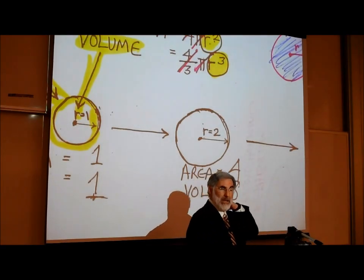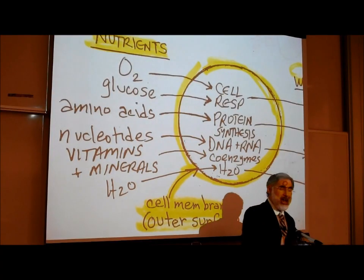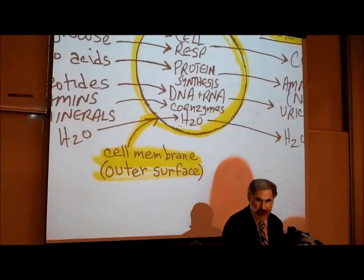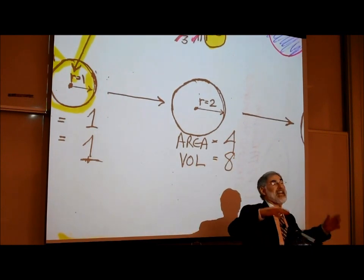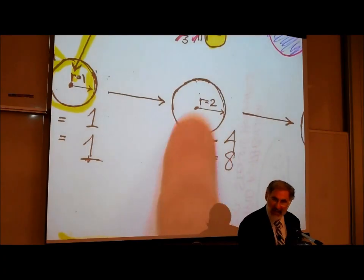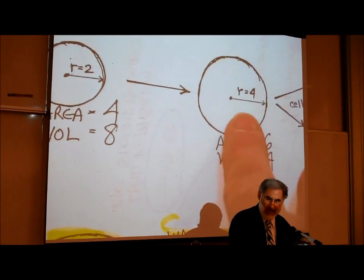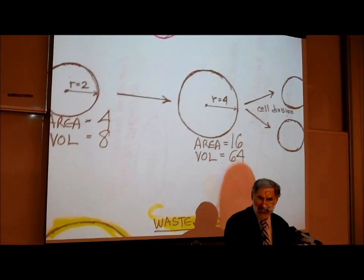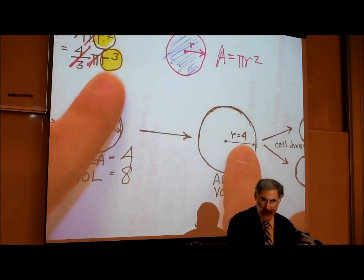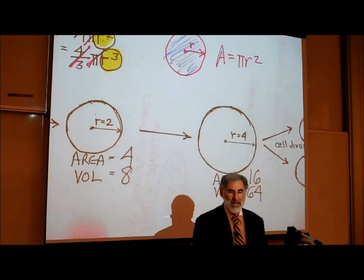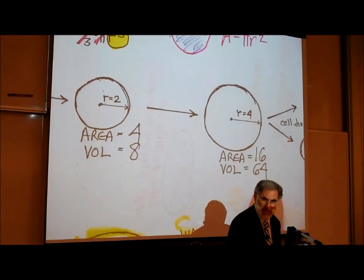Let's take it one more step: with a radius of 4, the outer surface is 4² = 16, and the internal volume is 4³ = 64. As this cell grows larger, its internal volume is increasing at a faster rate than its outer surface — because volume increases with the cube of the radius, while the surface only increases with the square. That means the need for nutrients inside the cell is increasing faster than the ability of nutrients to enter through the outer surface.